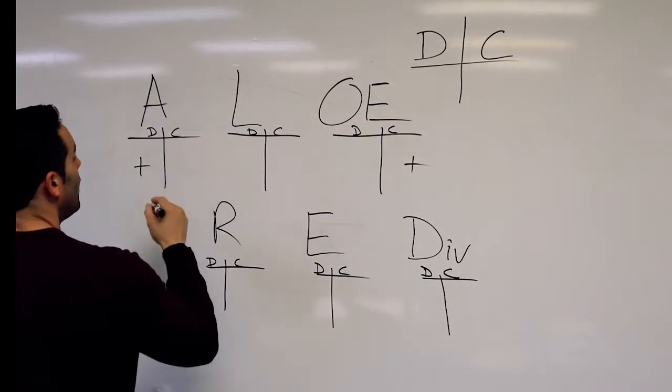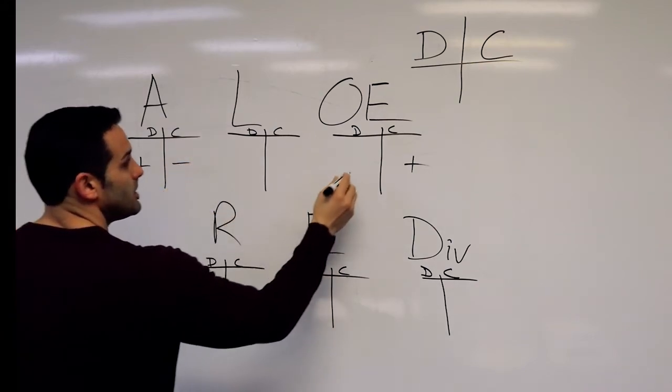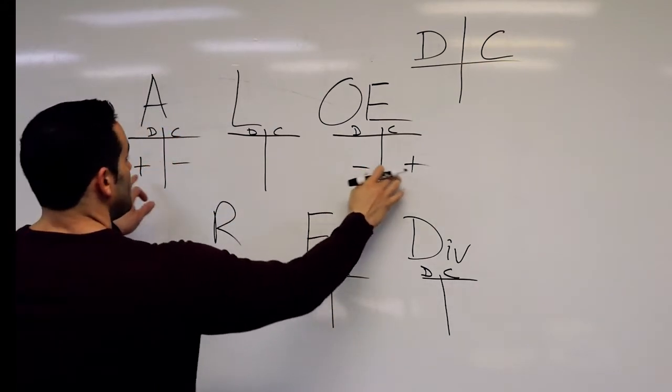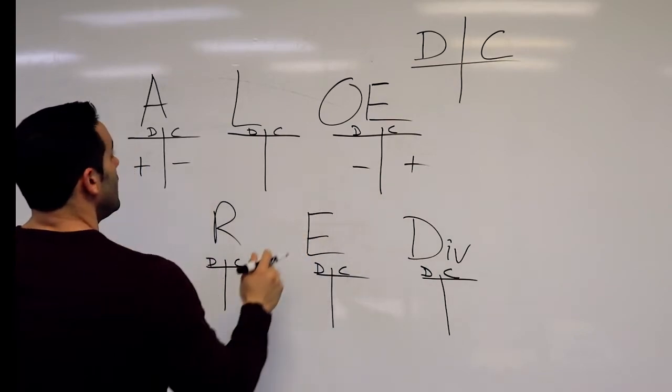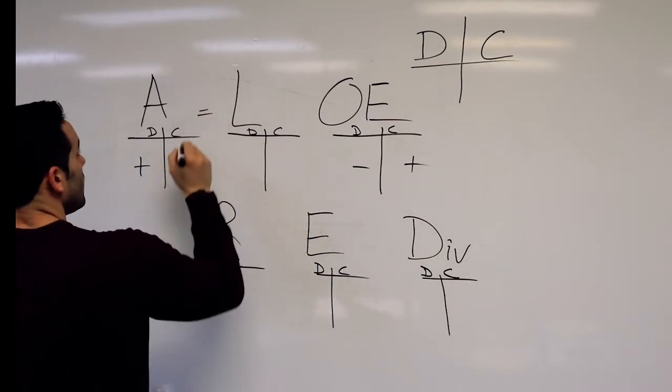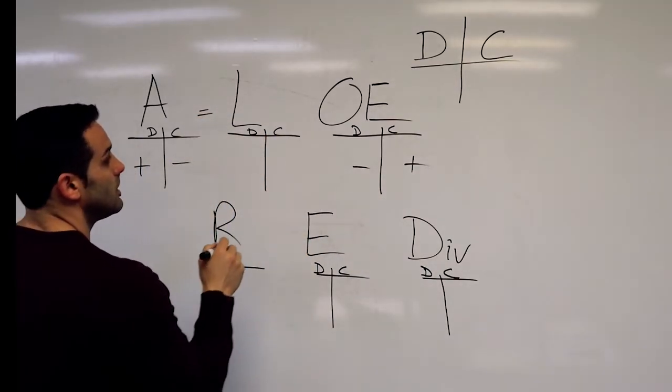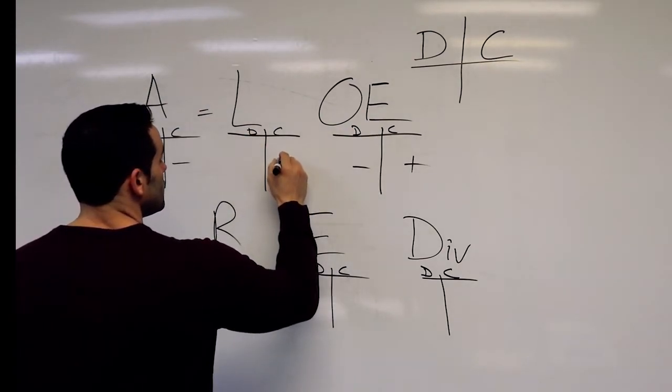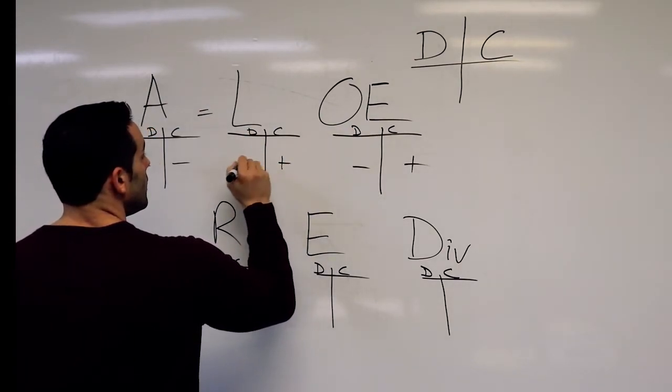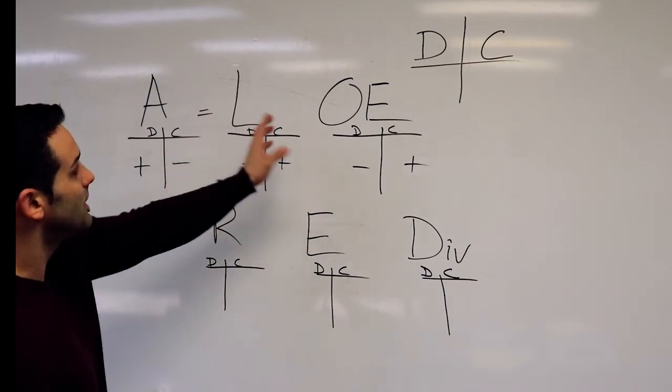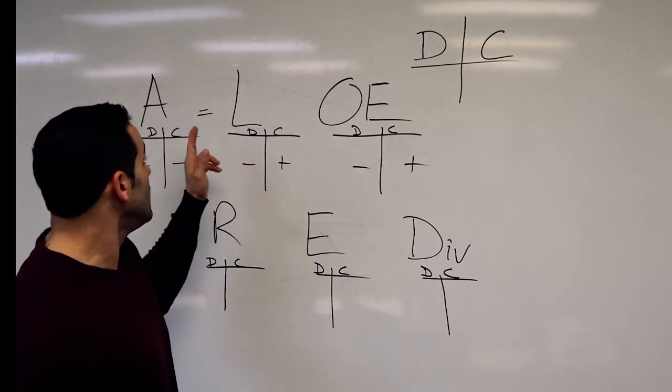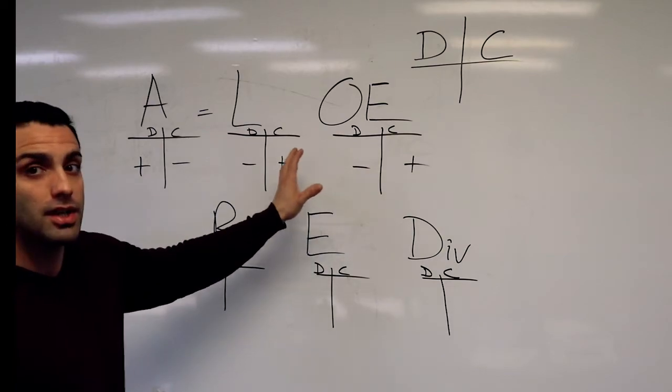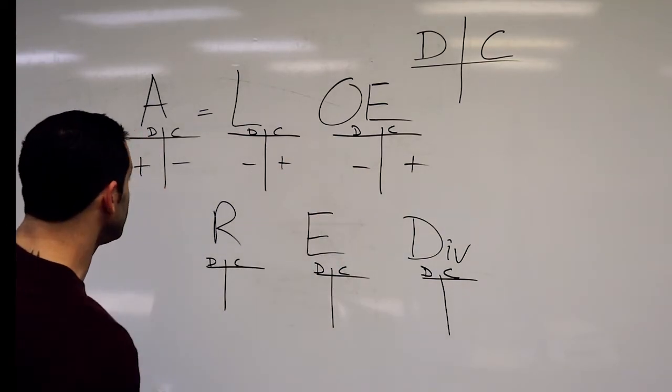So now it's just the opposite. We can fill in the opposite of these T-accounts and I'll make it our accounting equation. And liabilities follow the same as owner's equity. That's easy because it's on this side of the equal sign or equation with the owner's equity.